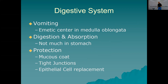Vomiting is a defensive mechanism — you could think of it as part of the immune system. There is a vomiting center in the medulla oblongata that, if you get the right irritation in the stomach, can reverse peristalsis and send stuff up.